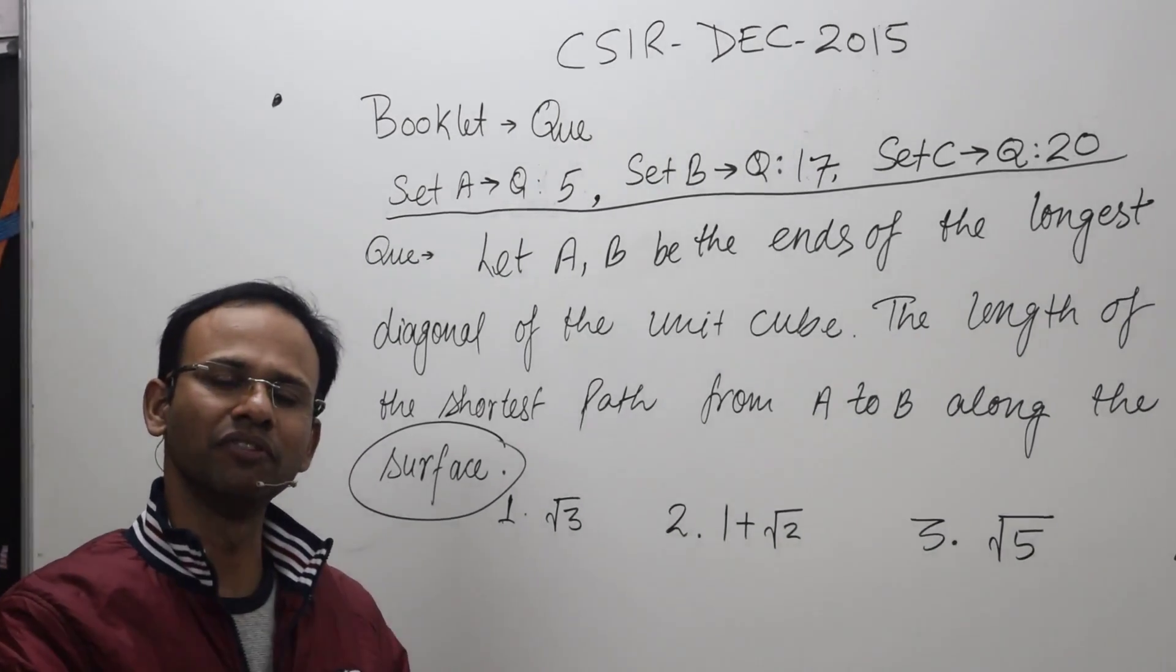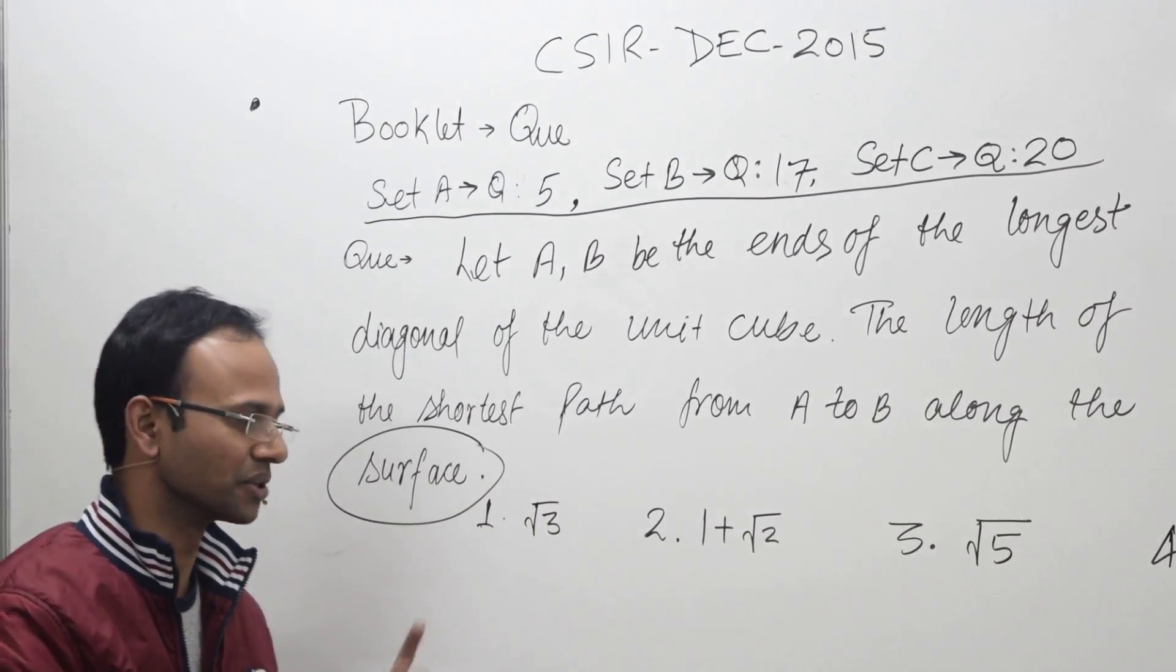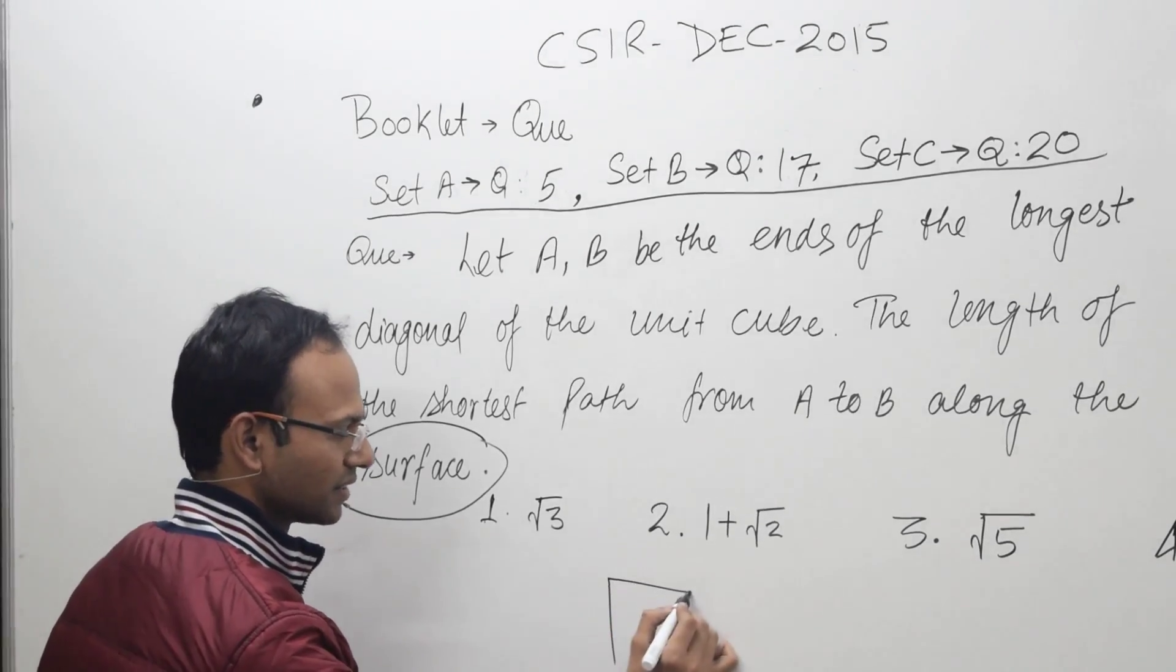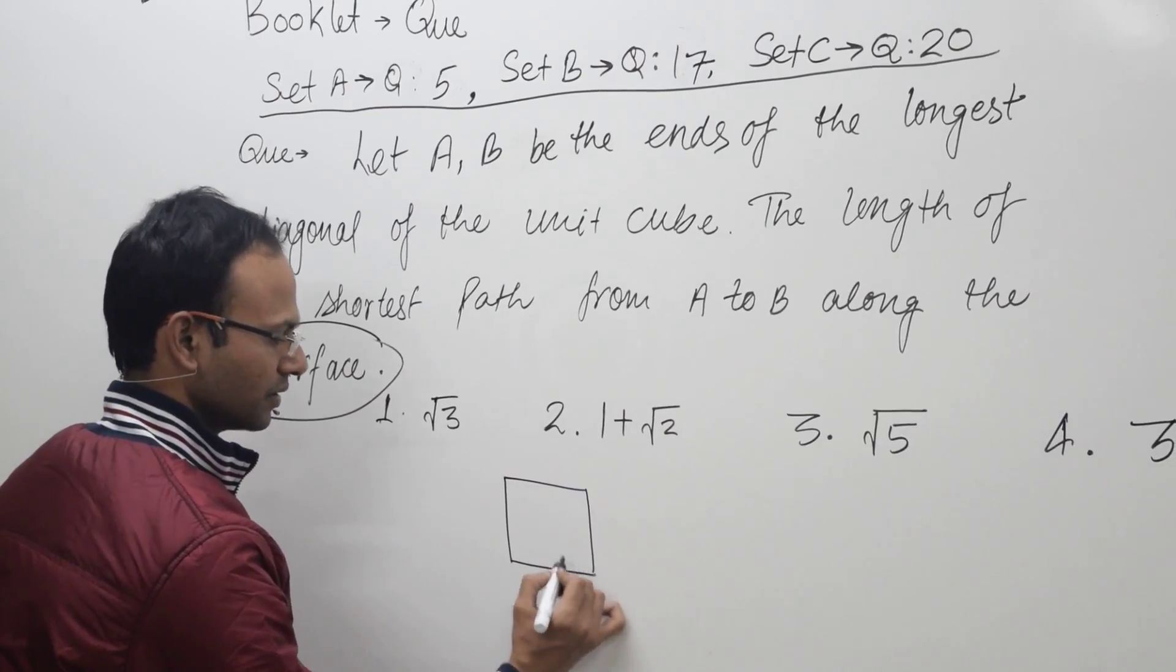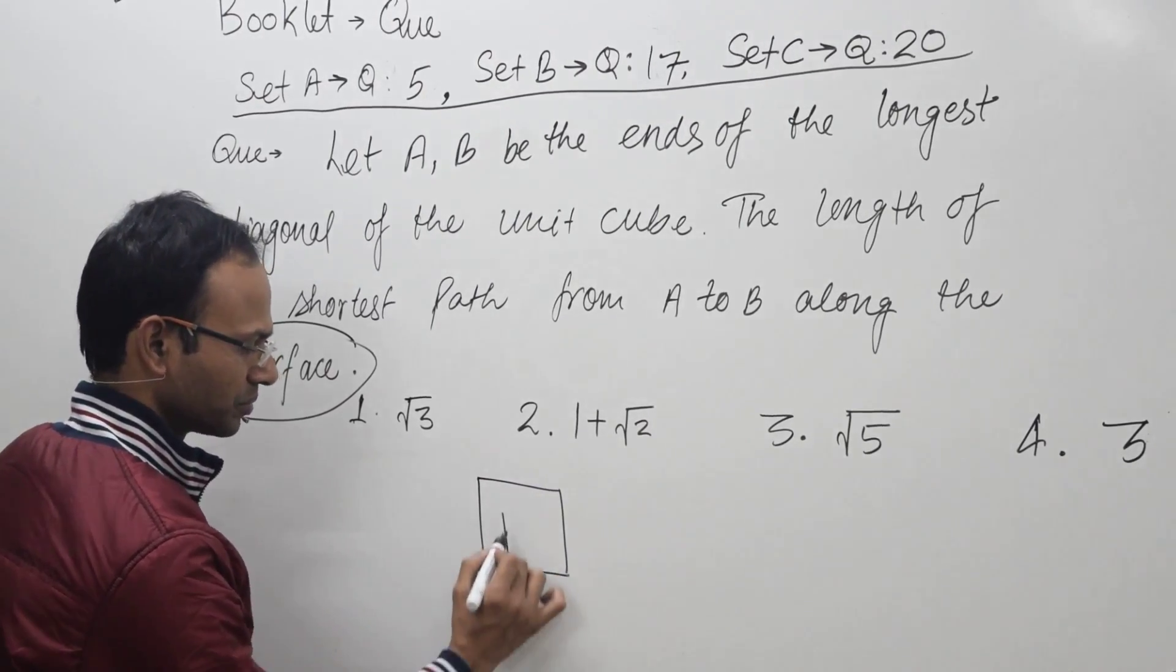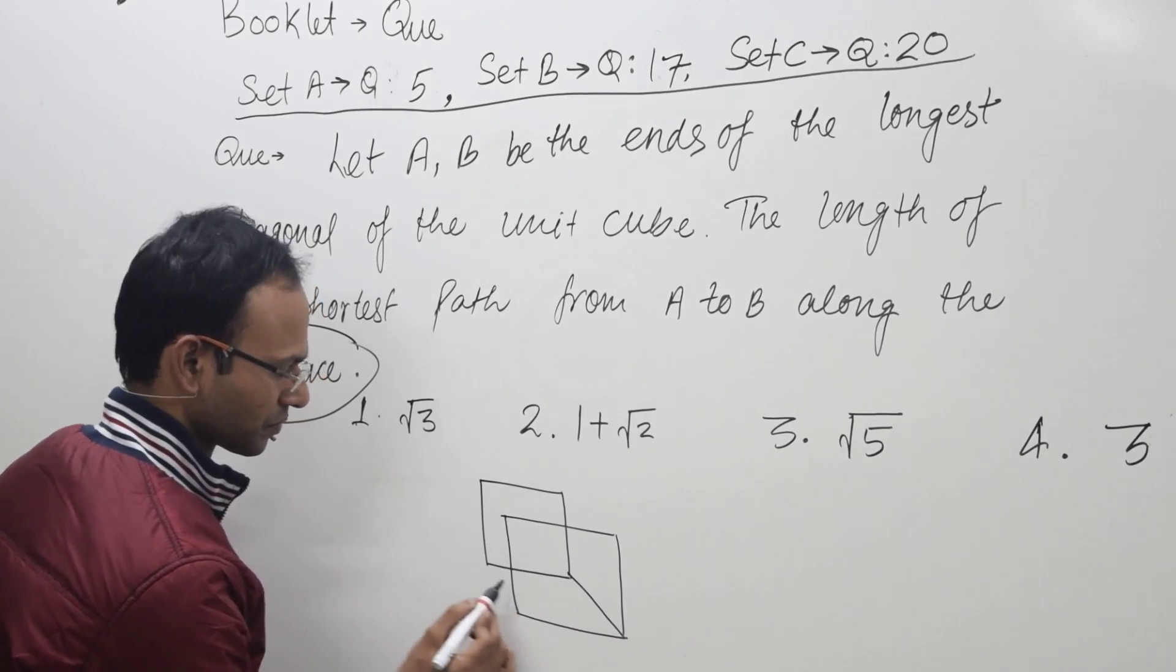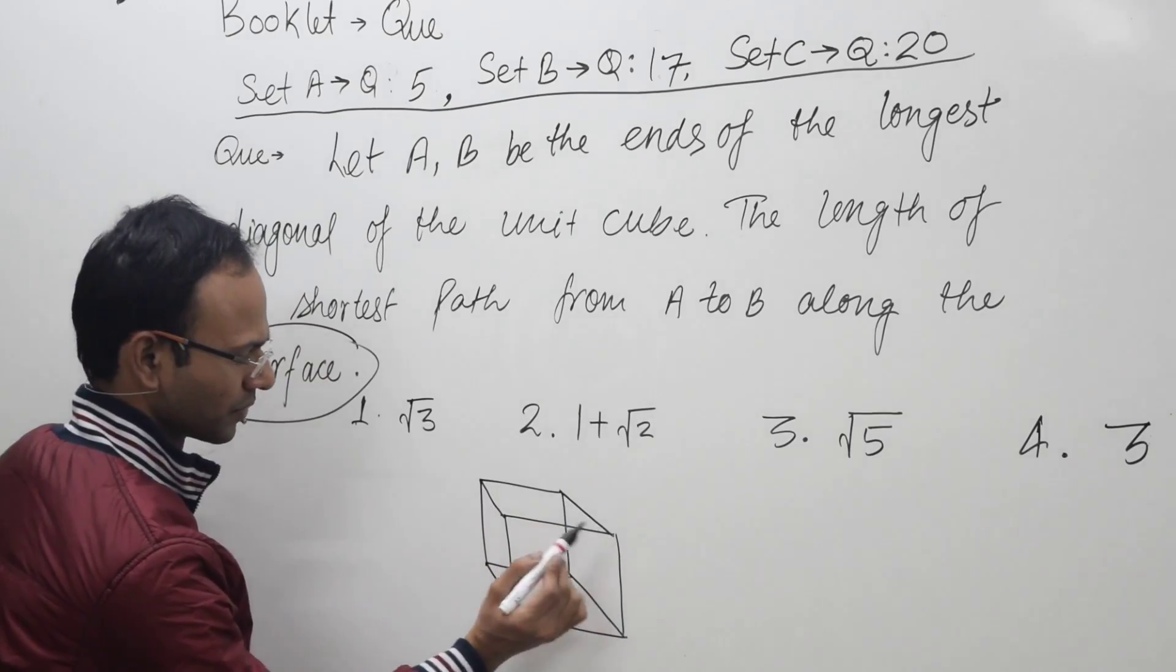So friends, suppose that this is the unit cube, like this. Now let's say this is A, this is O, and this is B. So we have to find the value of AOB.